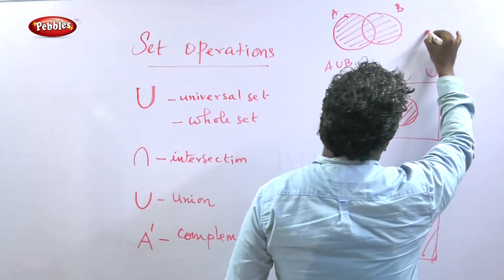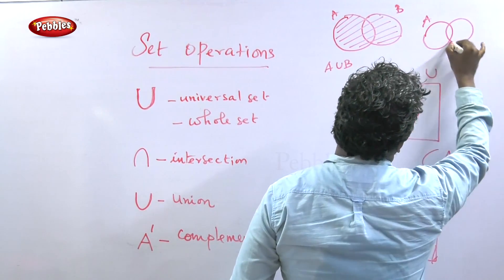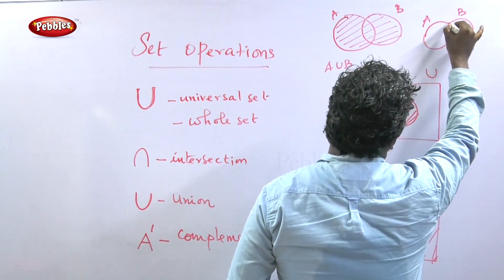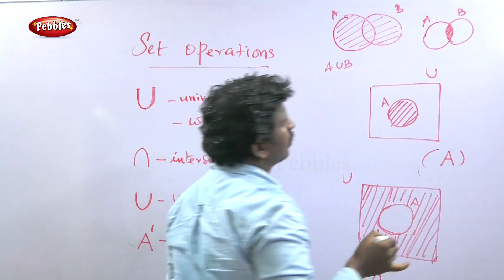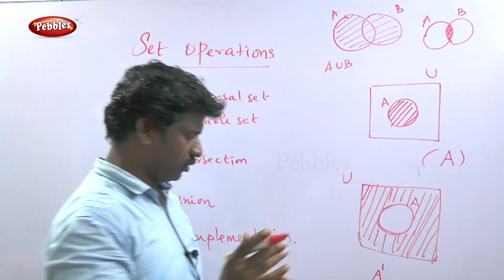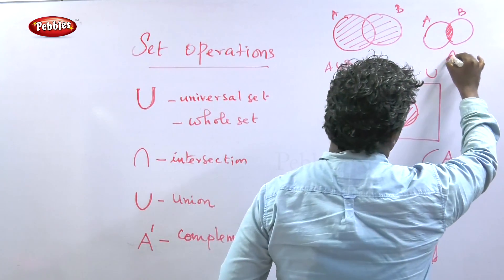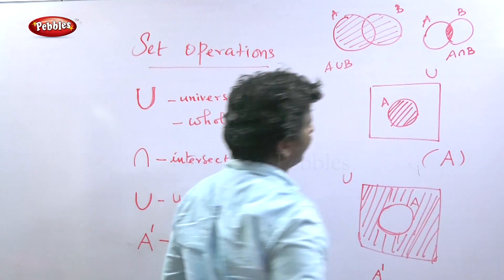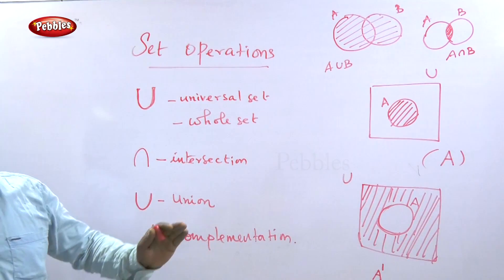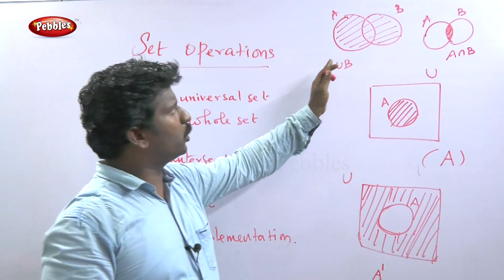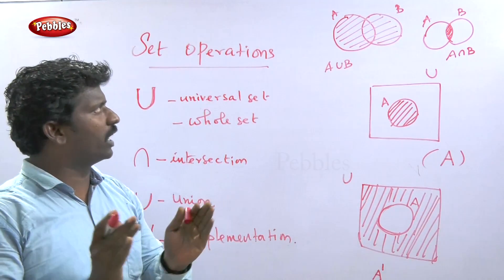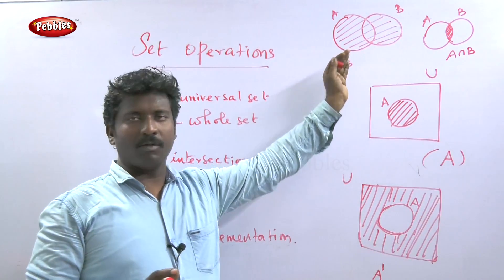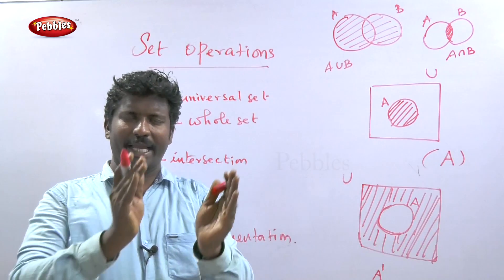Intersection means the shared or common part. The common part of A and B is the intersection. This is A intersection B. The meaning of union is joining A and B together.